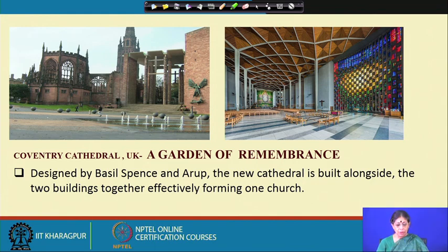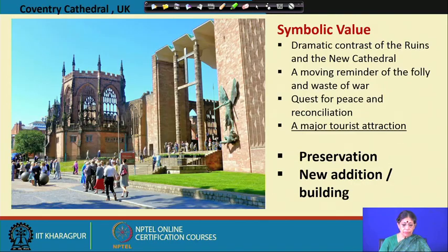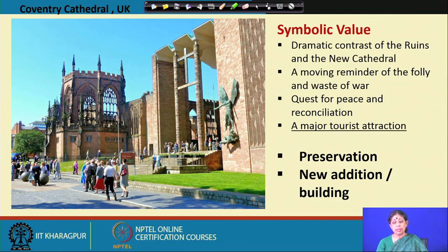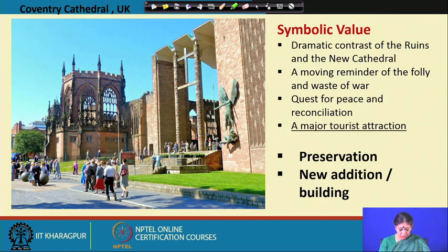Coventry Cathedral has become a garden of remembrance, designed by Basil Spence. The new cathedral is built alongside the old, the two buildings together effectively forming one church. It has attained a new symbolic value — achieved by the dramatic contrast of the ruins and the new cathedral — a moving reminder of the folly and waste of war and a quest for peace and reconciliation. By this it has become a major tourist attraction. Preservation and new addition to the building are also alternative approaches which have been taken in this conservation approach.